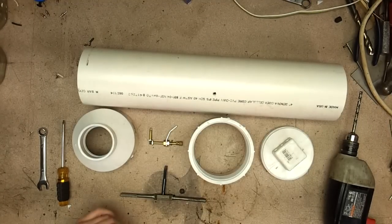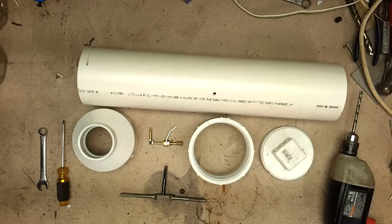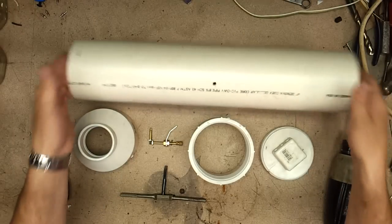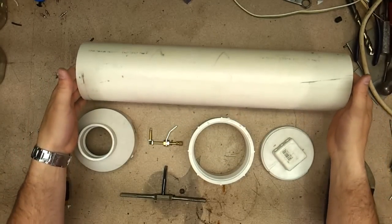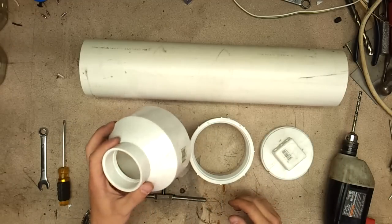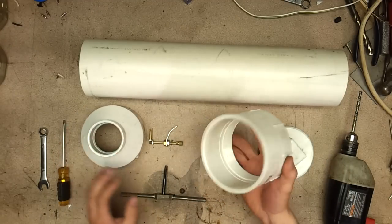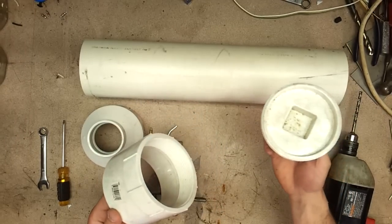This is everything you need to make a spud gun or potato gun. You're going to need a four inch piece of PVC pipe, this one is 20 inches approximately. You'll need a four inch to two inch adapter, you'll need a four inch with grooves, and obviously the cap for this.